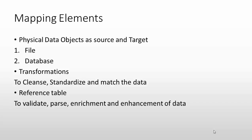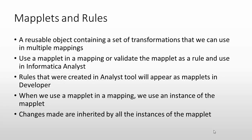Mapping elements include: physical data objects as source and target, which can be a physical flat file or a database. The mapping also involves transformations to clean, standardize, and achieve matching of data to overcome duplicacy. The next element is the reference table — the lookup table used to achieve lookup transformation — to validate, parse, enrich, and enhance data. These are the various elements of a mapping.